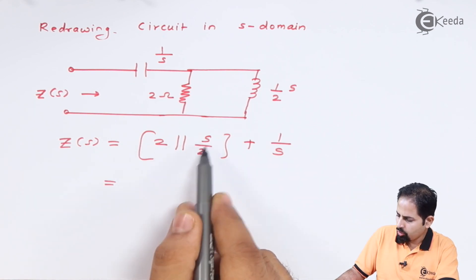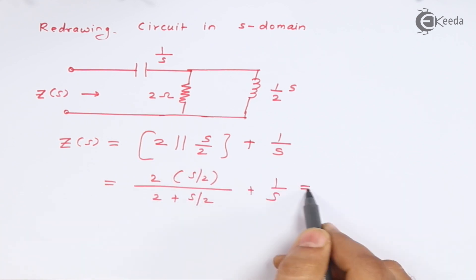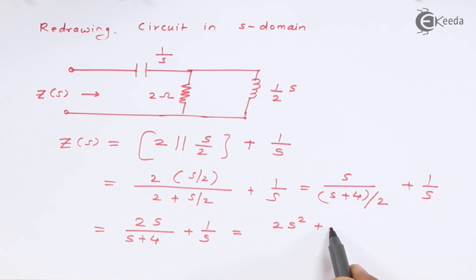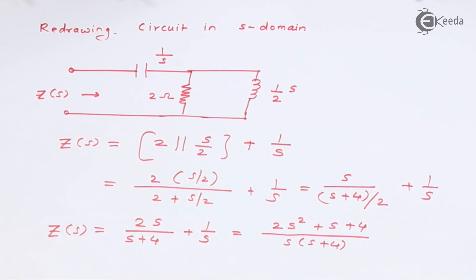So 2 into s/2... this is what we have got. Z(s) is equal to 2s² + s + 4, and here it is s(s + 4).